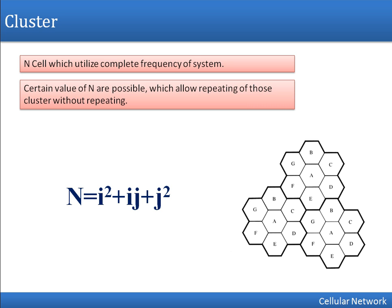Now, how are we going to find out the values of I and J? We have to find two cells with the same frequency. In this diagram, the characters represent a set of frequencies used in each cell. To find cluster size, pick any cell — let's say we pick this cell — and find another cell using the same frequency. You can select this one or this one; in our example we are selecting these two cells which are using the same set of frequency.